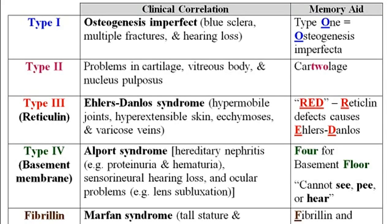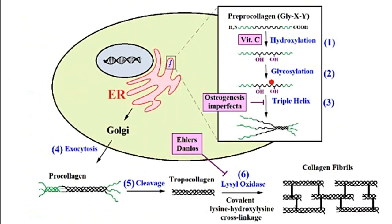In this video, I'm going to talk about the connective tissue disorders that are associated with defects in the formation of collagen type 1, collagen type 2, type 3, and type 4, and then finally, defect in the formation of fibrillin. But in order to understand some of these disorders, we will first have to go through the pathway through which collagen is being synthesized.